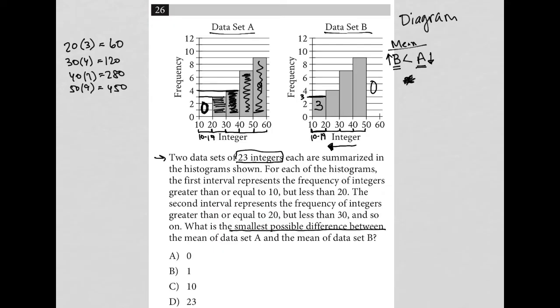I'm going to add up all these values together in my calculator, 60 plus 120 plus 280 plus 450. I get 910. And then because I know I have 23 integers or 23 data points, I divide that by 23 to actually find the average and it's 39.6. So there's my mean.